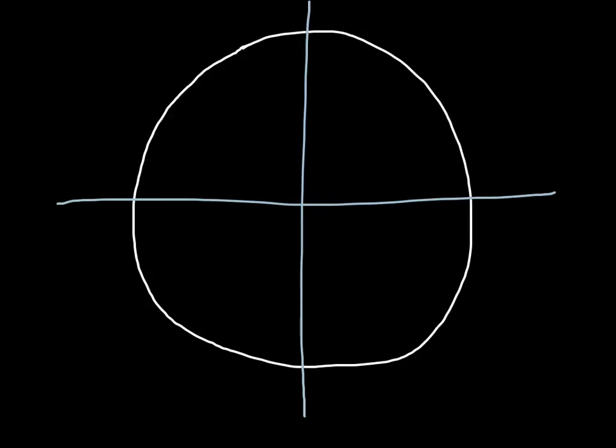Before we get started with the midpoint of a circle, we have to know the terminology. So first, we have the diameter. The diameter is from one point at the end of the circle to the next.